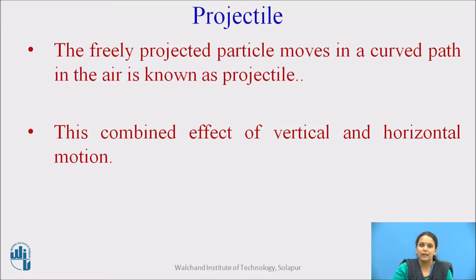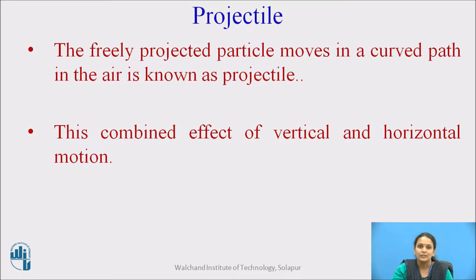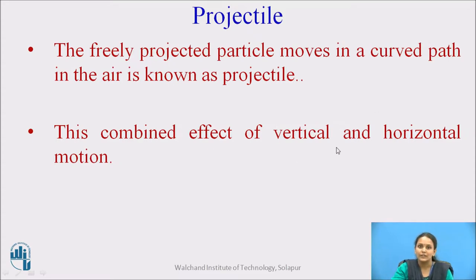A freely projected particle that moves in a curved path in air is known as a projectile. This is the combined effect of vertical and horizontal motion. Normally, whenever we throw a particle upward, we consider it as vertical. But it is not in a vertical position — it is in a curved position. So, it will have the combined effect of vertical as well as horizontal motion.